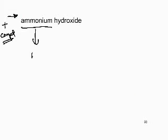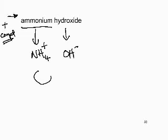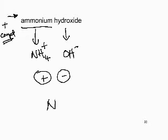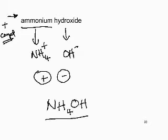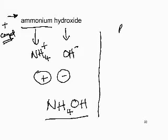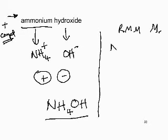So we have NH₄⁺ and OH⁻. A positive ion and a negative ion — they balance. The formula reflects one of each: NH₄OH. Work out the relative molecular mass of ammonium hydroxide.